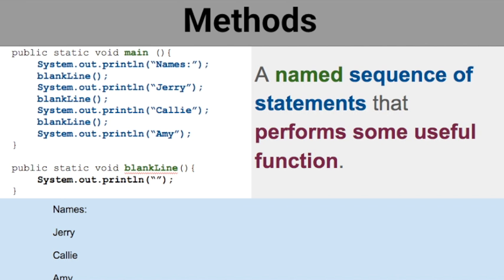We need to know what a method is. A method is defined as a named sequence of statements that performs some useful function. The reason you create a method is to make your code as efficient as possible. As soon as you start seeing patterns or repetition in your code, you can make a method out of that to avoid repetitive code and just call your method instead.